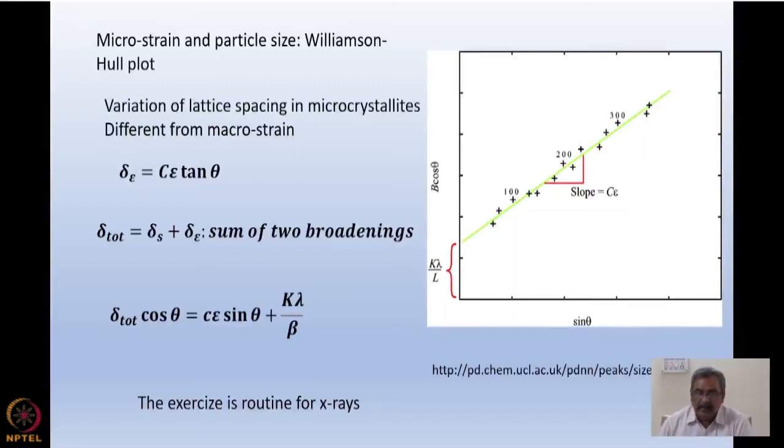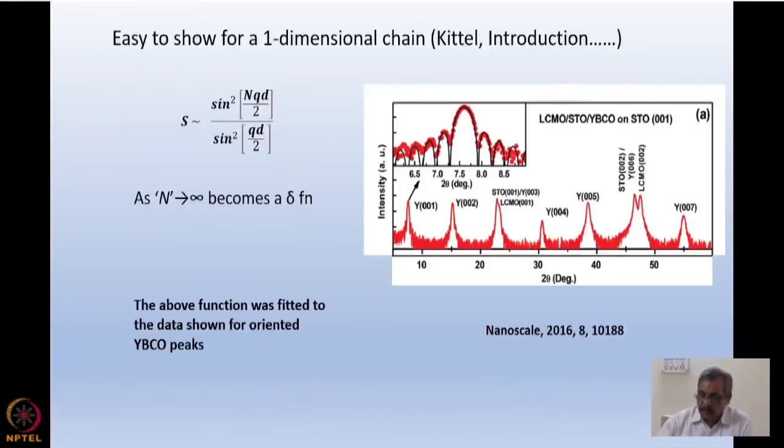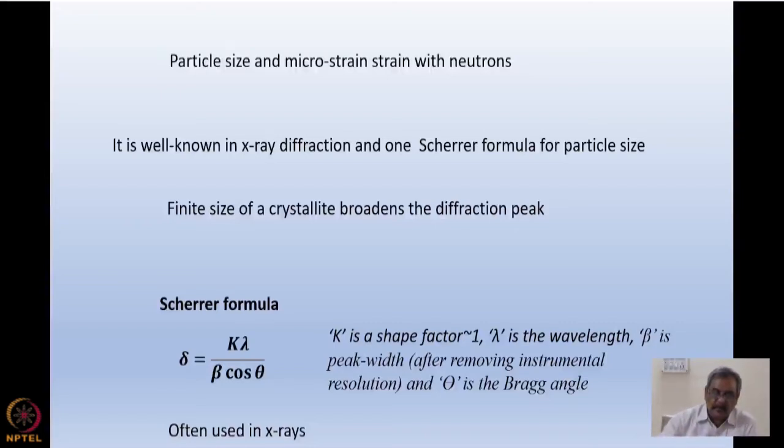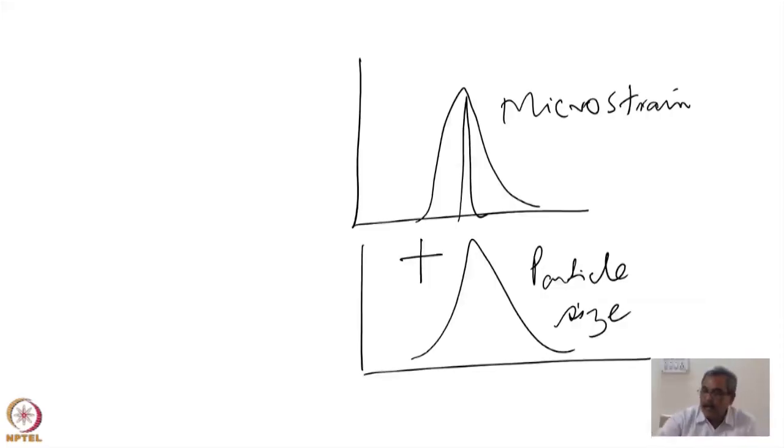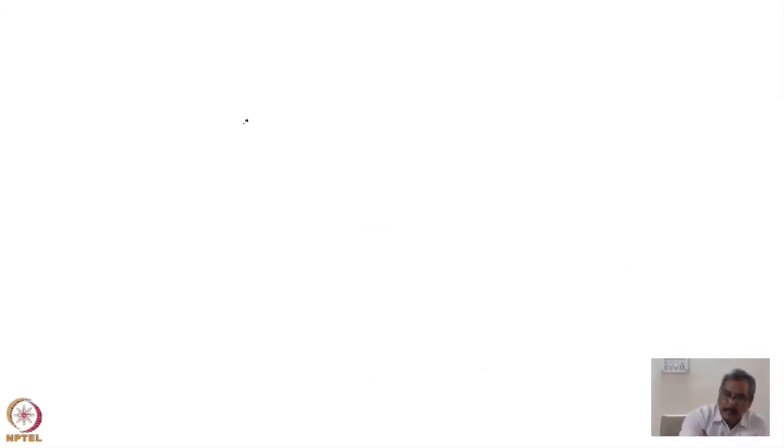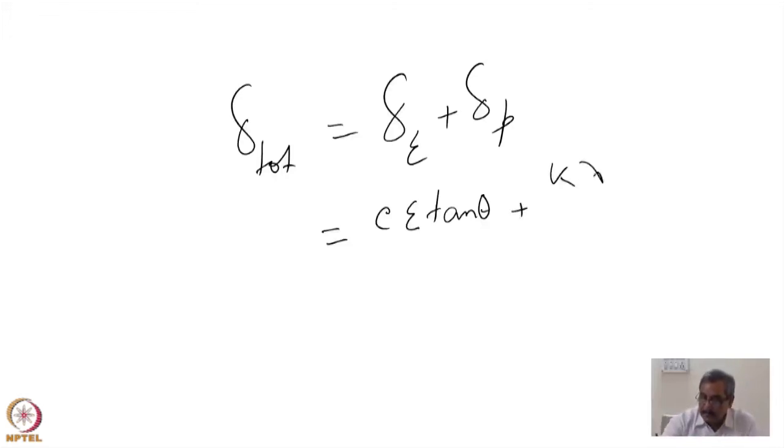And there is also the broadening due to particle size which is K λ / (β cos θ). So we have two deltas. So I have now δ_total, I consider this as sum of the two: δ due to strain plus δ due to particle size. So this comes to C ε tan θ plus K λ / (β cos θ).